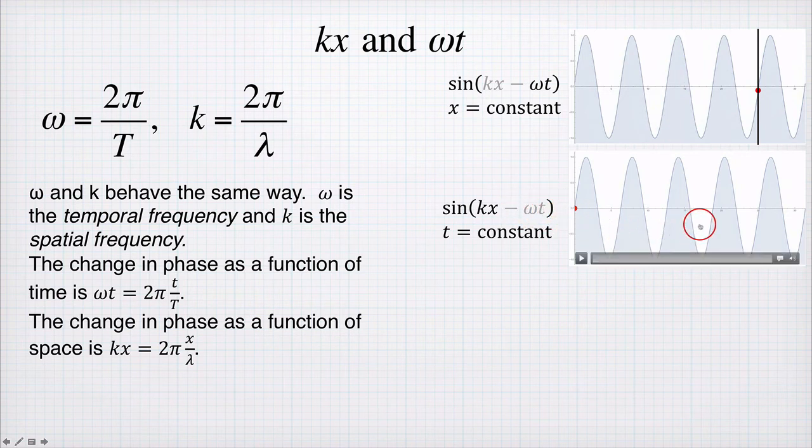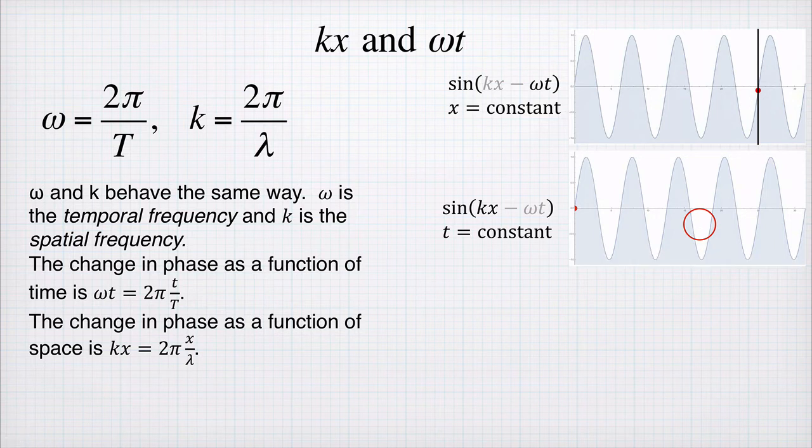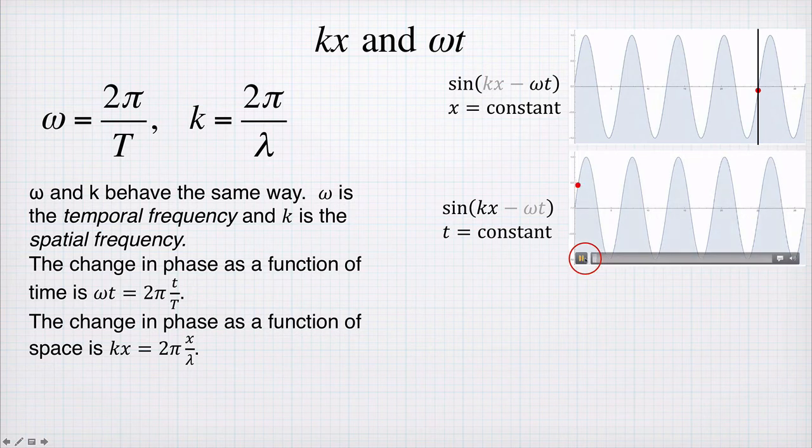So here we're going to set the time constant. So instead of the wave moving, it's going to be a snapshot, a frozen picture of the wave at a fixed point in time. And now we're going to look at changing the position x. So now our red dot moves along the surface of the wave. Time is constant, but now we're thinking about changing x.